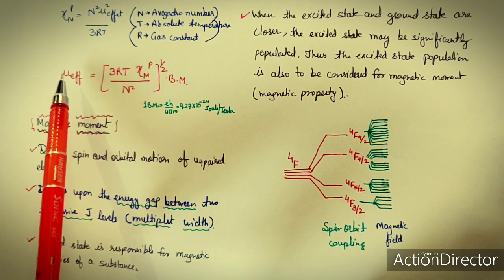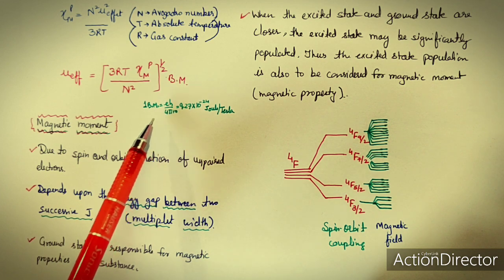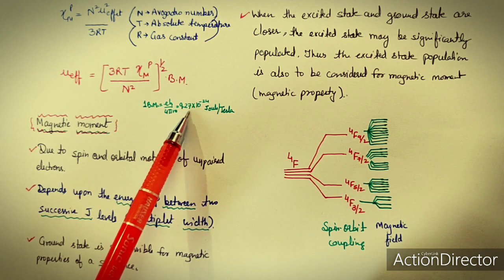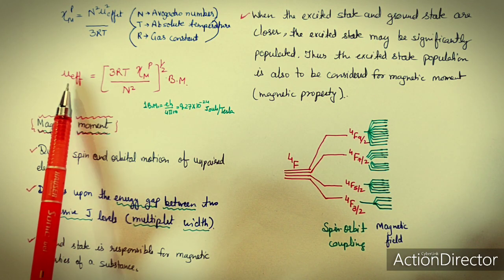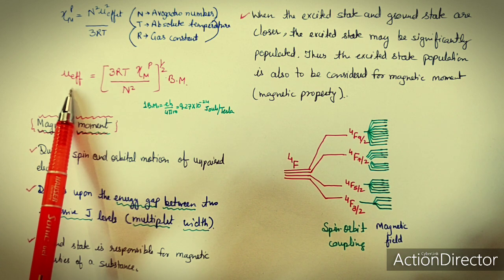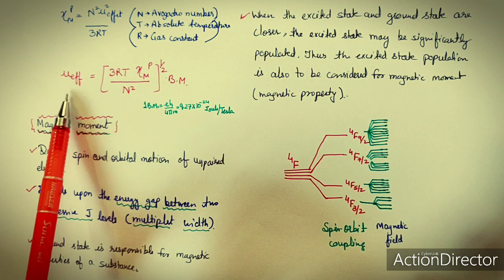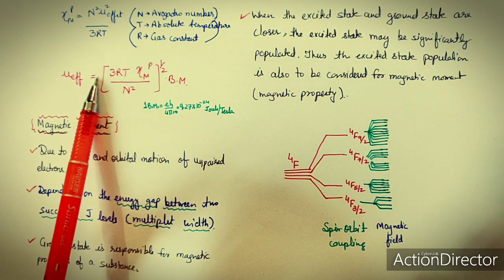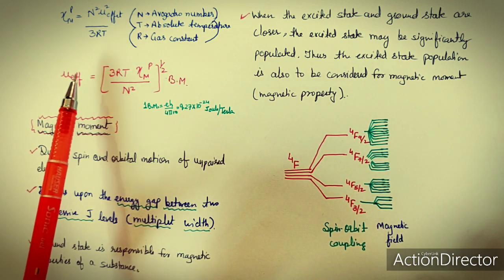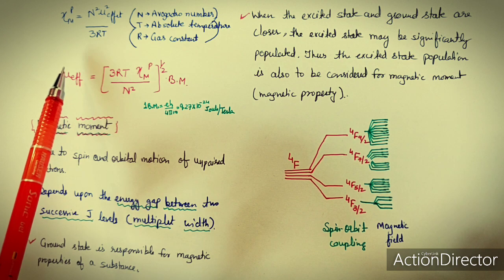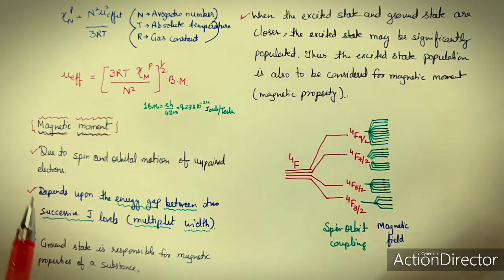The effective magnetic moment is calculated in Bohr magnetons, where one Bohr magneton equals eħ/(4πm) = 9.27 × 10⁻²⁴ J/T. If we know the magnetic moment, we can easily calculate the number of unpaired electrons. This forms a chain: from H₀ and B we calculate kappa, from kappa we calculate molar susceptibility, from molar susceptibility we calculate magnetic moment, and from that the number of unpaired electrons.